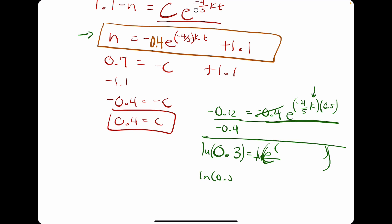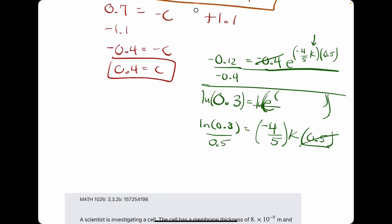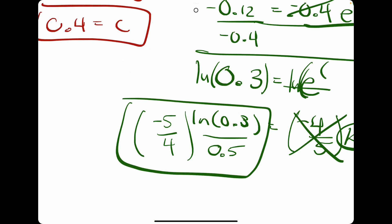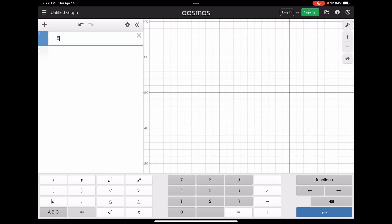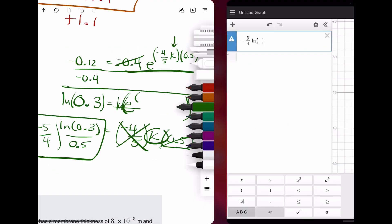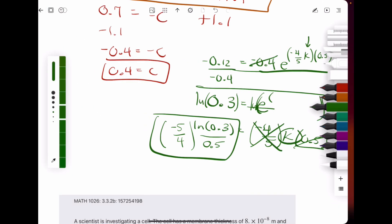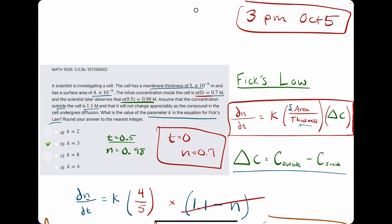So we'll have ln of 0.3 equals just what was left in the exponent of e. So we have all this. So if we divide by 0.5, we'll get rid of that. And then if we divide by negative 4 fifths, in other words, multiply by negative 5 fourths, we should get k by itself. So let's see if we plug this in if we'll have any success. Negative 5 fourths ln of 0.3 divided by 0.5, and that gives us 3.00. So hopefully k is equal to 3. Looks like option B, and we get our answer.